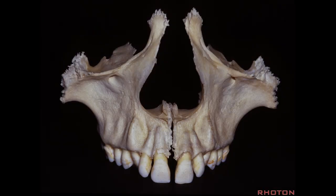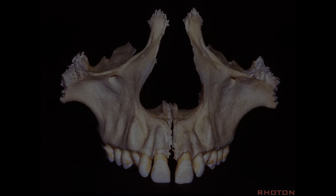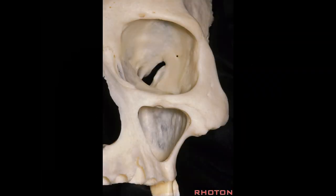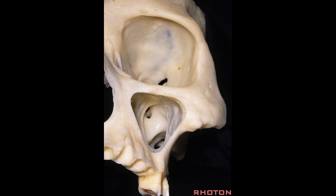This maxillary bone has a large cavity in it—a large sinus—through which if you open the maxilla and go directly backwards and open the back wall, you can enter the pterygopalatine fossa.